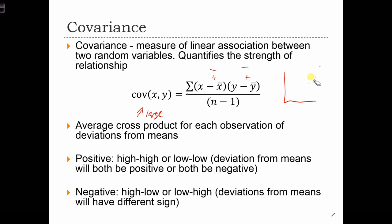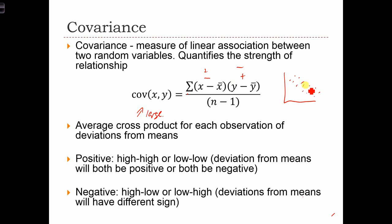What about the case where we have a negative relationship between the two variables? In this case we have low x and high y — a negative and a positive — or we can have high x and low y — a positive and a negative. In these two cases the cross product terms are going to be negative, and the sum of all the cross product terms is going to be negative. So when we have a negative relationship, the covariance between x and y is also going to be a negative value. And the more negative this relationship, the more negative it's going to be.